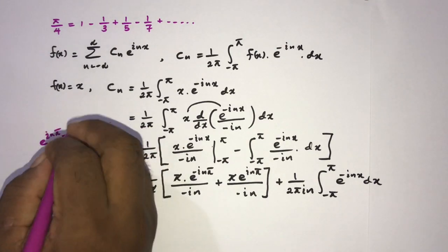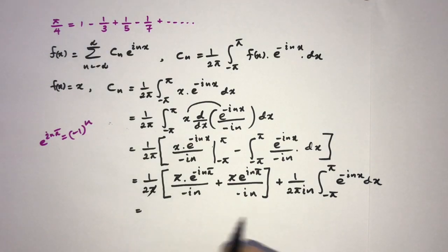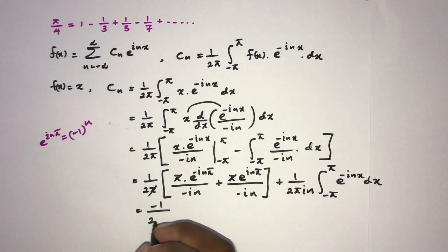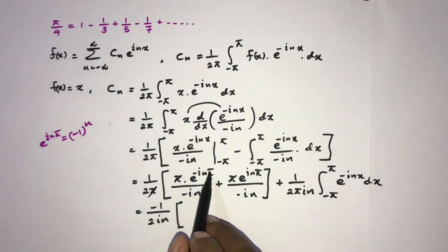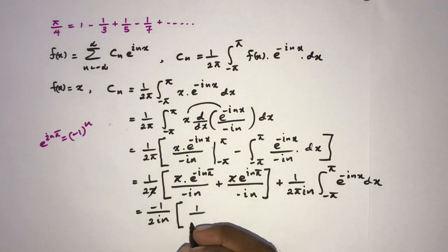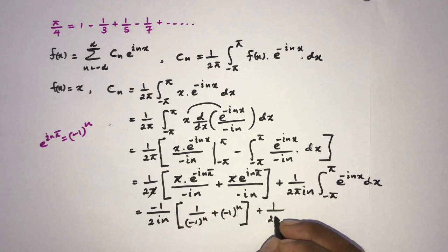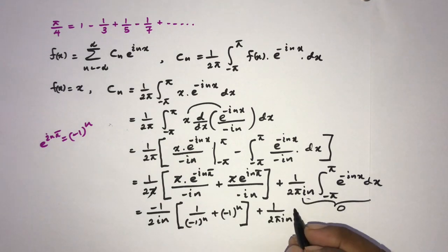We know e to the i·pi raised to the n power equals minus 1 to the n. We can simplify: with minus in in the denominator we write minus 1 over 2in, and e to the i·phi equals 1 over e to the minus i·phi, giving us terms with minus 1 to the n. The remaining integral is equal to 0, so that part vanishes.